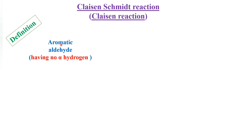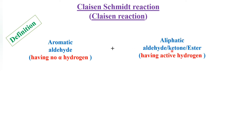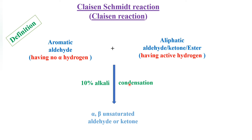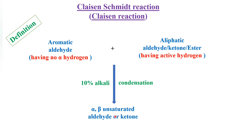Aromatic aldehydes that are not having any alpha hydrogen react with aliphatic aldehydes, ketones, or esters that are having active hydrogen, in the presence of 10% alkali, and undergo condensation to form alpha-beta unsaturated carbonyl compounds, or alpha-beta unsaturated aldehydes or ketones.